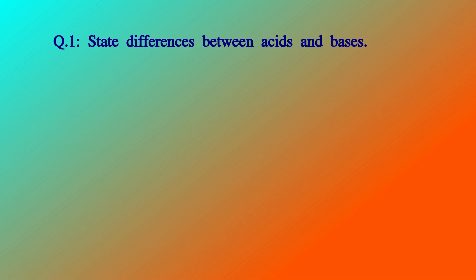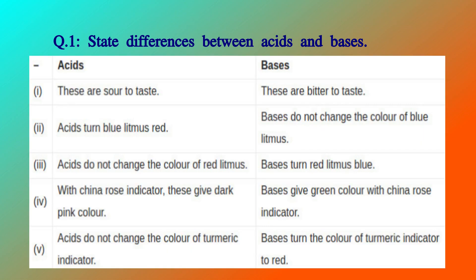The first question is: state the difference between acids and bases. Acids: 1. These are sour to taste. Bases: These are bitter to taste. 2. Acids turn blue litmus red. Bases do not change the color of blue litmus.